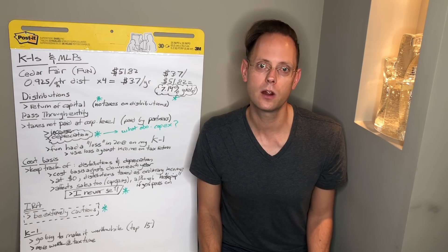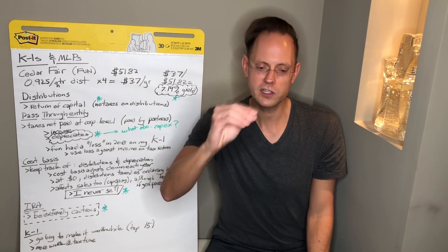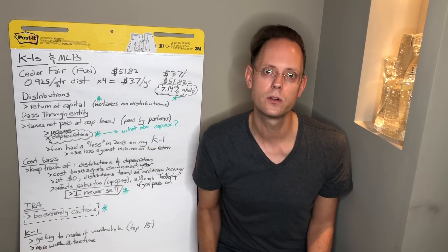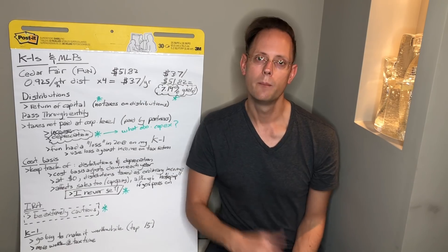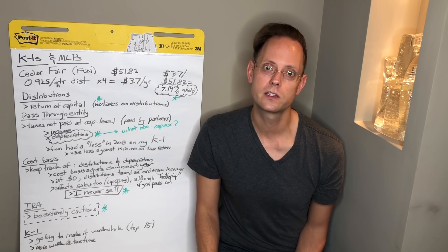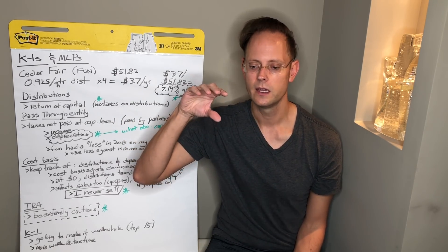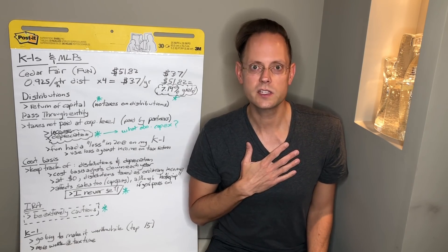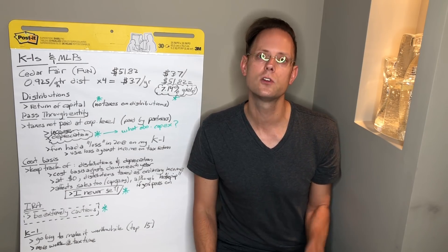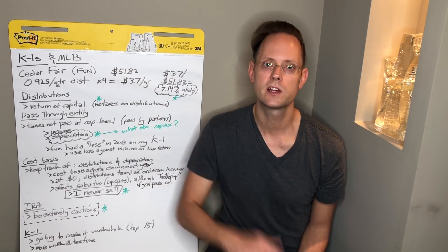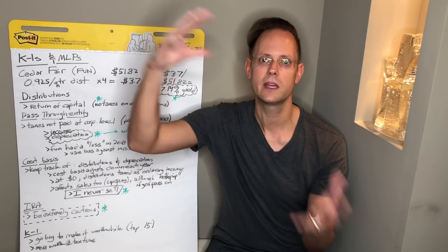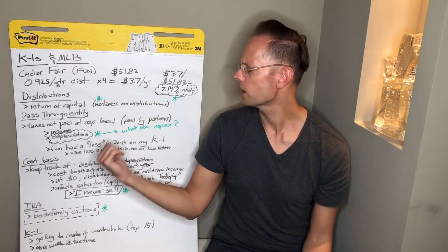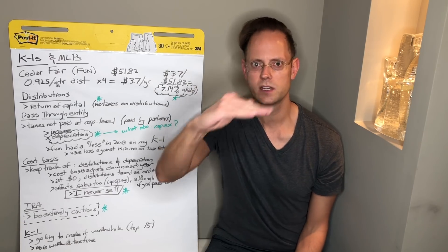One concept that is really important with Master Limited Partnerships is to keep track of the cost basis. Cost basis literally goes down over time because of the return of capital distributions, but also the depreciation that flows through. My cost basis in 2018 alone got a big haircut because Cedar Fair had a great year for me — I got a bunch of distributions, and I got a net loss because of their depreciation. So I have to adjust my cost basis downward. This doesn't affect me too much because I buy and hold forever.